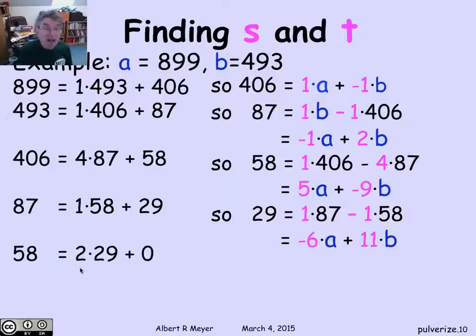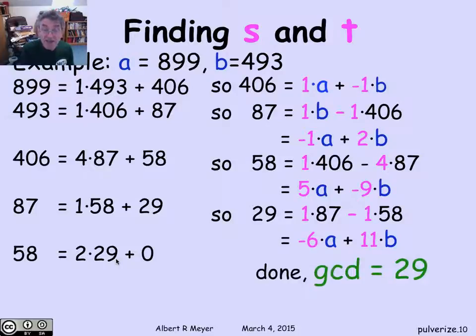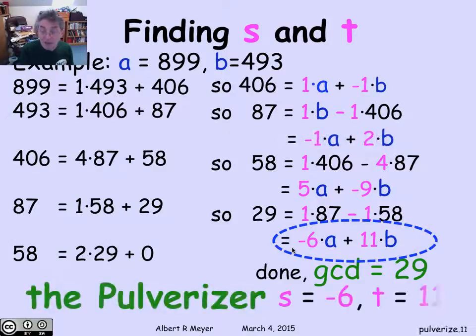Next, I take the quotient of 58 divided by 29. The quotient is 2, but the remainder is 0. That's the stopping condition for the Euclidean algorithm. The GCD of 29 and 0 is 29. But look what we got in the last step. I had expressed that GCD as a linear combination of a and b. That's the pulverizer. I've just figured out that possible values for s and t are minus 6 and 11.